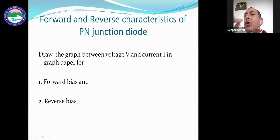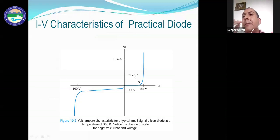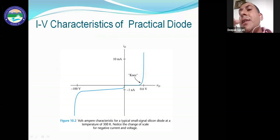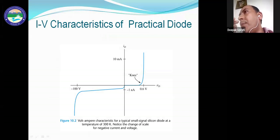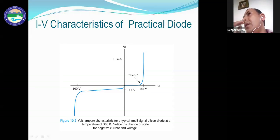Our work is to draw the forward and reverse characteristics of the p-n junction diode — voltage versus current graph. The graph shows: in the forward bias section (right), there is initially almost no current due to the junction barrier, then current increases sharply once the applied voltage exceeds the barrier. In the reverse bias section (left), there is almost zero current — very low current due to minority charge carriers.